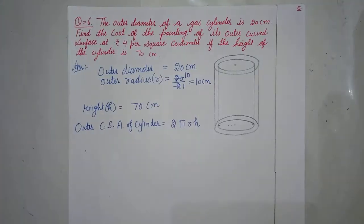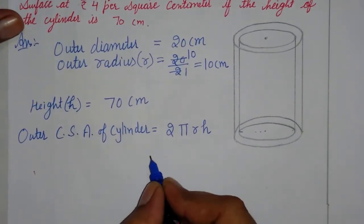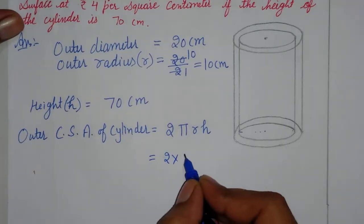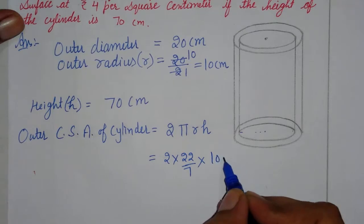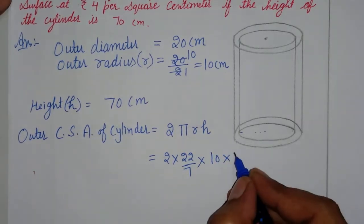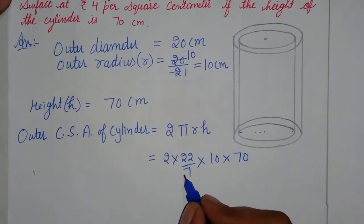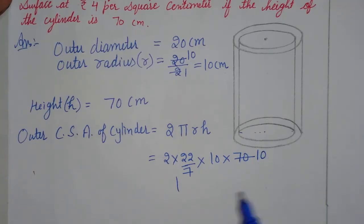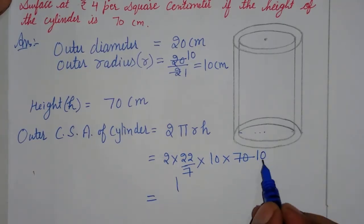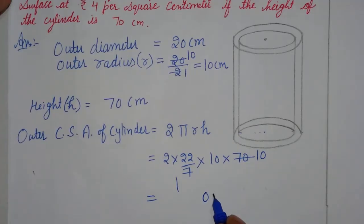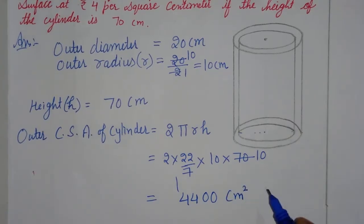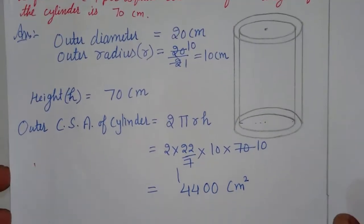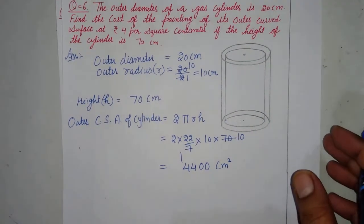The curved surface area of the cylinder: here we have 2π, which is 22/7, radius is 10, and height is 70. Cancel 7 with 70, leaving 10. So we have 2 × 10 × 10 × 22 = 4400 square centimeters. So this is our outer curved surface area: 4400 cm².